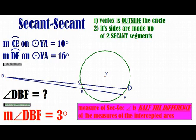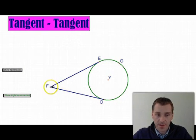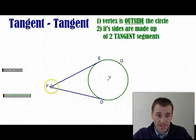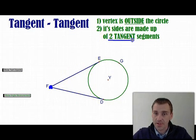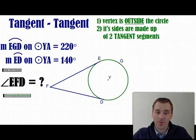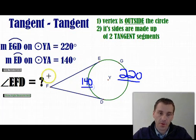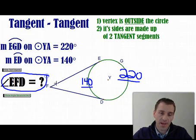Now let's move on to the tangent-tangent angle. Write this in the same foldable flap. A tangent-tangent angle looks like this: you have a circle with two tangents meeting outside. The vertex is outside the circle, and its sides are made up of two tangent segments. The question is: how do you find its measure? Let's say the major arc is 220 degrees and the minor arc is 140 degrees.